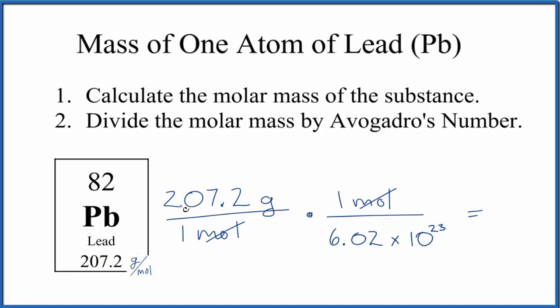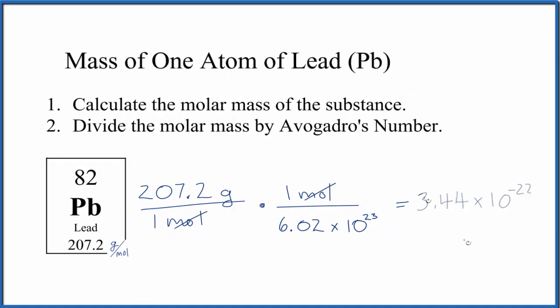We divide 207.2 by Avogadro's number and get 3.44 times 10 to the negative 22nd grams.